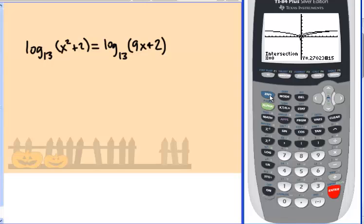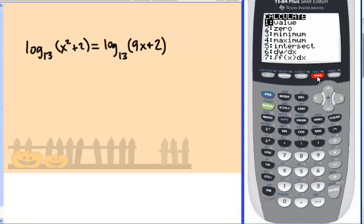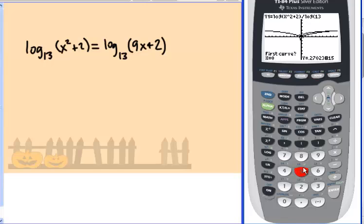To find the second solution, go ahead and hit second trace again. Choose intersect again, and you can either arrow key down to it or choose 5. And then you have to move the spider close to that other point of intersection. So go ahead and arrow key to the right. And just get that spider close to that second point of intersection. And once you get close, go ahead and hit enter to choose it.